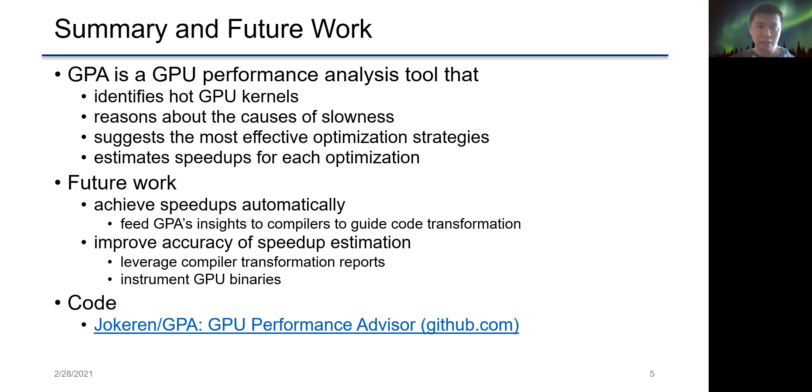So overall, GPA is a GPU performance analysis tool that identifies hot GPU kernels, reasons about the causes of slowness, suggests the most effective optimization strategies, and estimates speedups for each optimization.